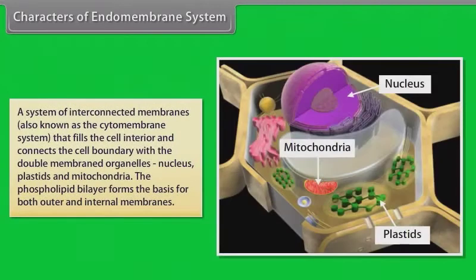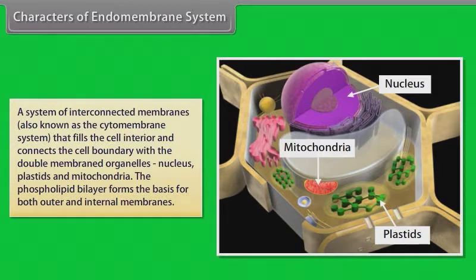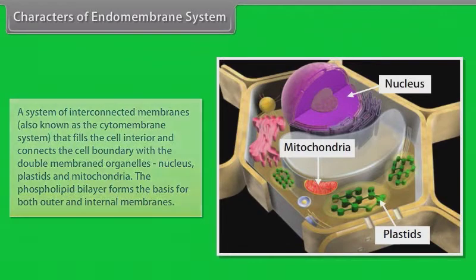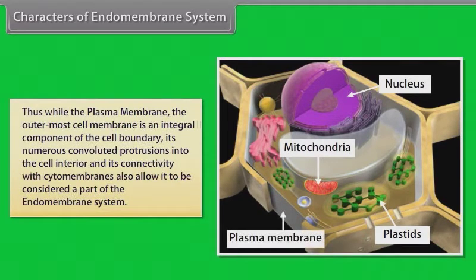Characters of endomembrane system: A system of interconnected membranes, also known as the cytomembrane system, that fills the cell interior and connects the cell boundary with the double-membraned organelles — nucleus, plastids and mitochondria. The phospholipid bilayer forms the basis for both outer and internal membranes. While the plasma membrane is an integral component of the cell boundary, its numerous convoluted protrusions into the cell interior and its connectivity with the cytomembranes also allow it to be considered a part of the endomembrane system.